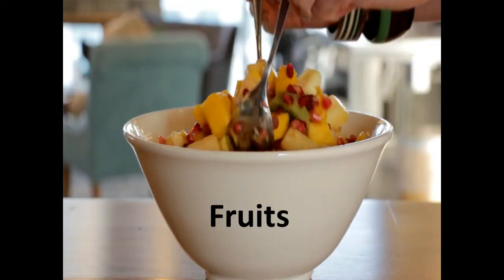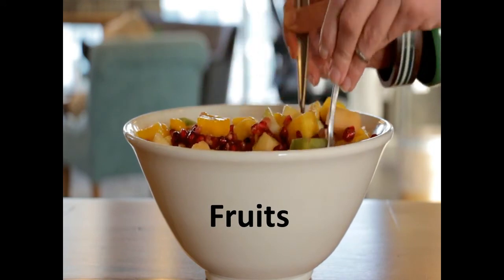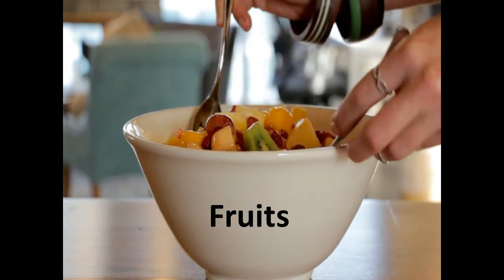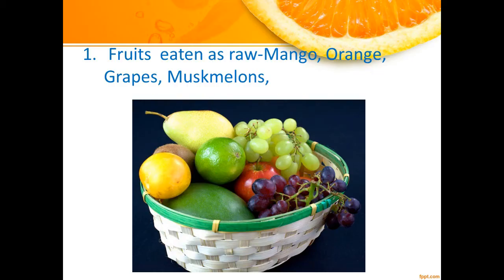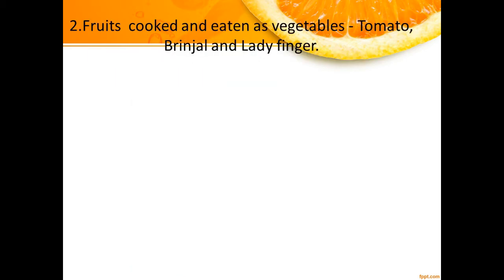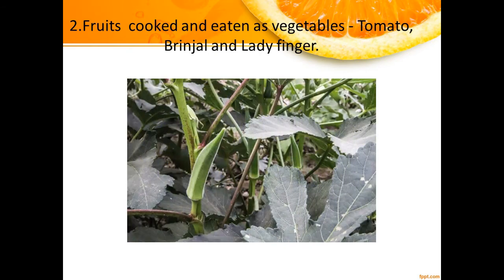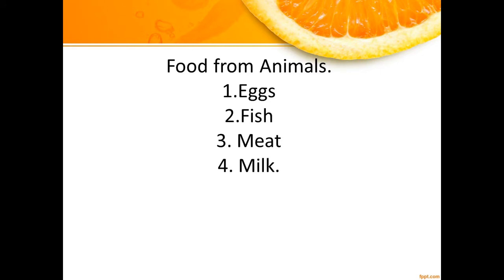Plants give us varieties of fruits. Fruits keep us fit and healthy and also protect us from various types of diseases. Some fruits are juicy and sweet, like mangoes, oranges, grapes, muskmelon, and watermelon, which are eaten raw. But there are some fruits which are cooked and eaten as vegetables, like tomato, brinjal, and ladyfinger. Some fruits like tomato are eaten raw as well as cooked.